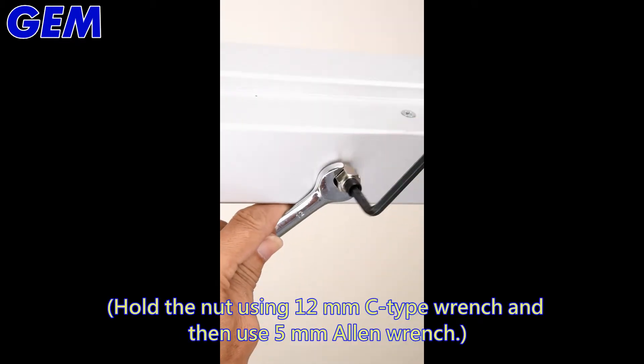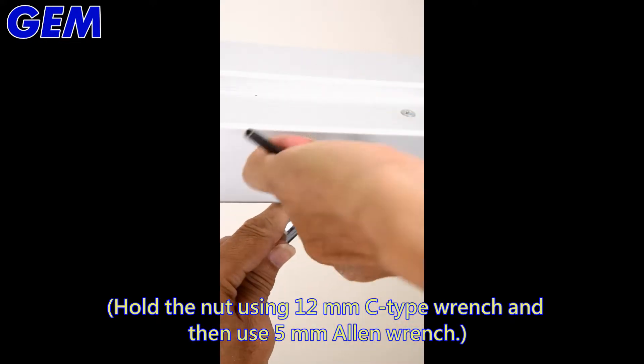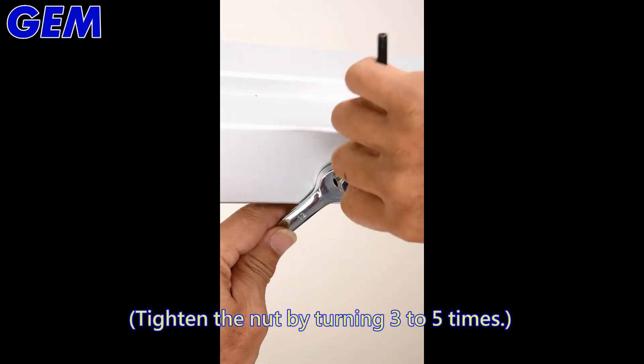Hold the knot using 12mm C type wrench and then use 5mm Allen wrench. Tighten the knot by turning 3 to 5 times.